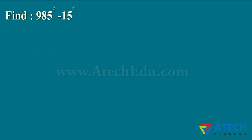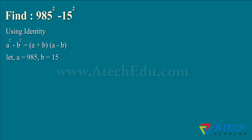Find 985² − 15². We will use the standard identity A² − B² equals (A + B) multiplied by (A − B). Let A equal 985 and B equal 15. Upon applying these values and solving, we get the result as shown.